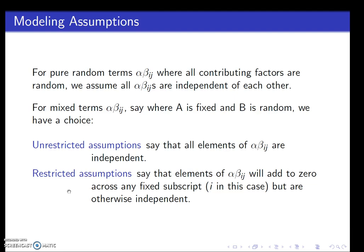So if we have pure random terms, those interaction terms, alpha betas, where all those factors are random and we can assume that they are independent, we can make some assumptions. I've alluded to this many times in class, but I didn't want to introduce it until this point because it was going to be too much too early, I think.